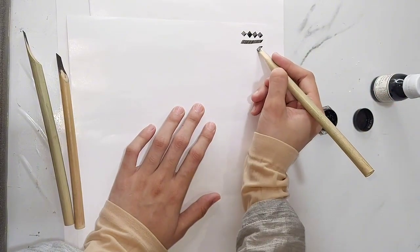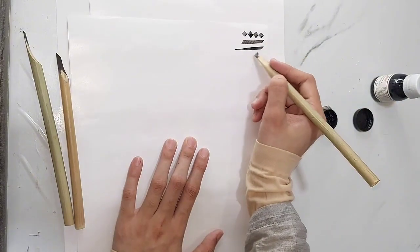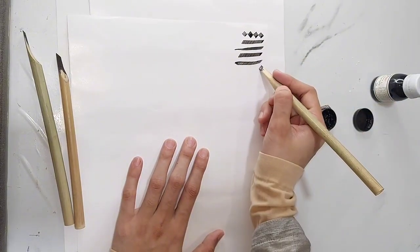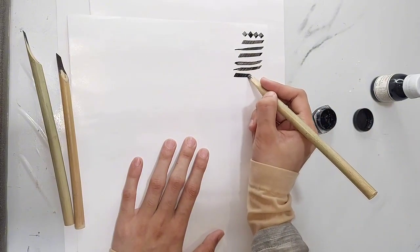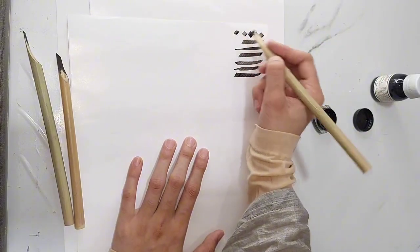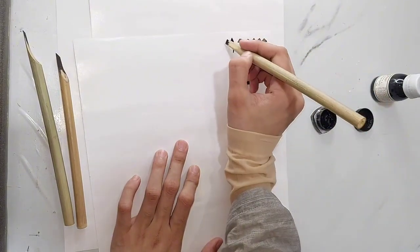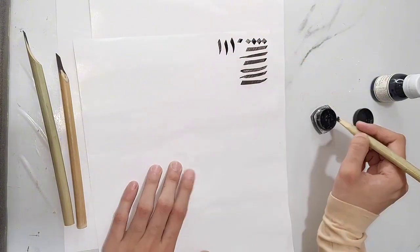With the calligraphy, we use the lines as well as left to right, right to left. This is how we use the qalam to control our hand movements.